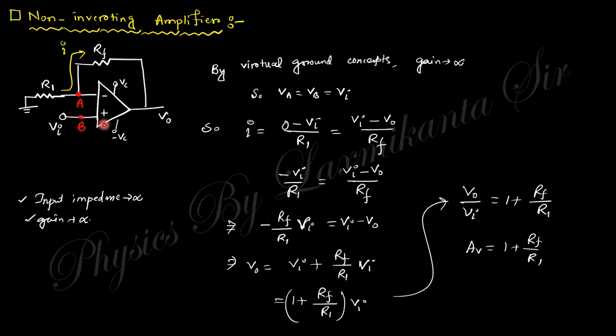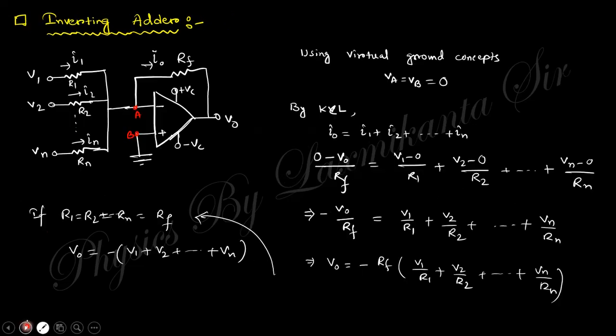This is called the non-inverting amplifier, denoted as a positive (plus) sign — the phase does not change. The inverting amplifier is denoted as minus (code number 2) and the non-inverting amplifier (code number 3) does not change phase.